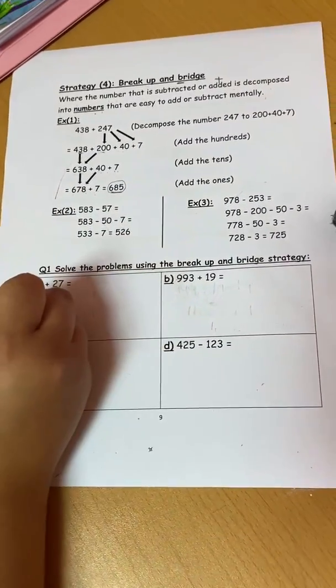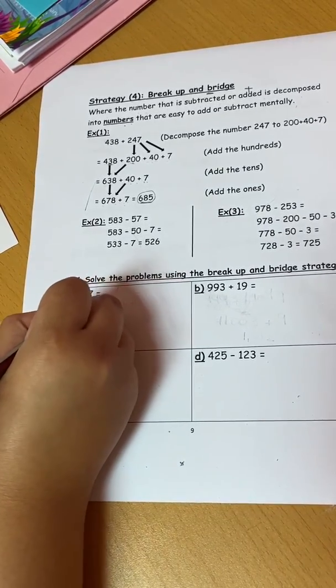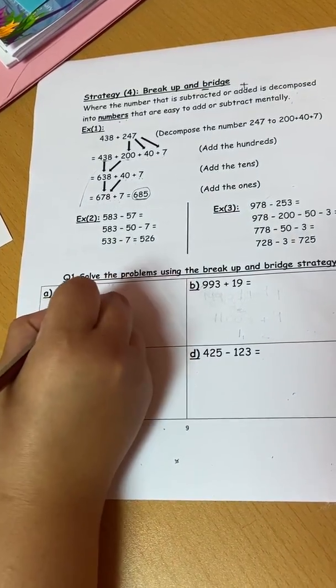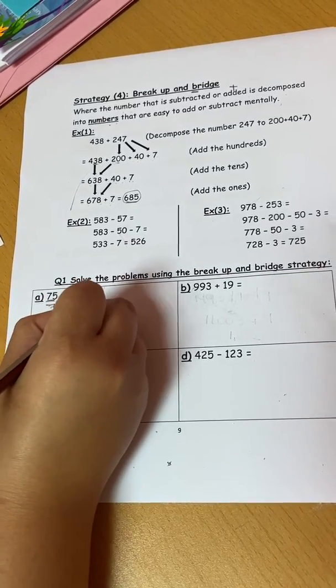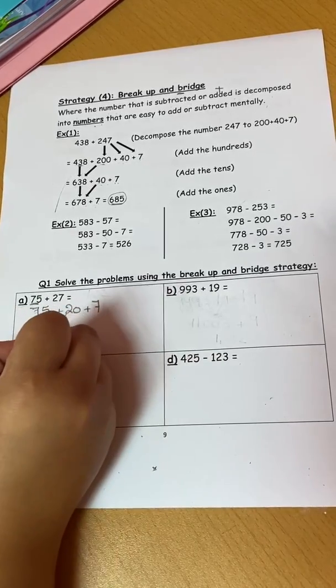Here first example I have 75 plus 27. The 75 is the greater number so I will leave it as it is while I will decompose the other number which is the smaller, plus 20 plus 7. I will add the tens together so 75 plus 20 I got 95.